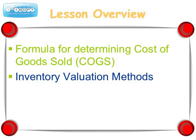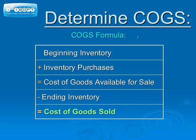In this lesson, we will discuss the formula for determining cost of goods sold and inventory valuation methods. The formula starts off with the beginning inventory balance, which is the cost of the inventory that was already on hand from the prior accounting period. Then we add in the cost of current period inventory purchases, and this gives us the cost of goods available for sale. If we subtract out the ending inventory balance from the cost of goods available for sale, we end up with the cost of goods sold.